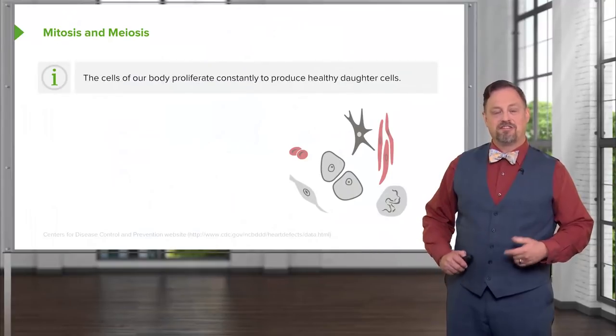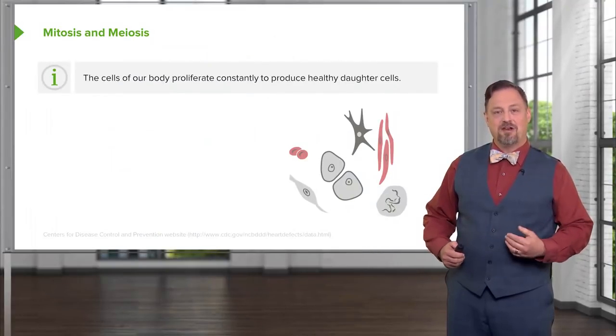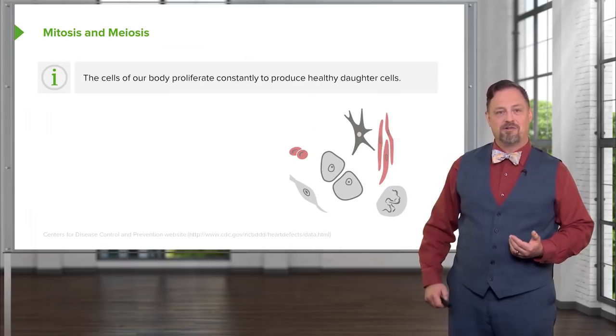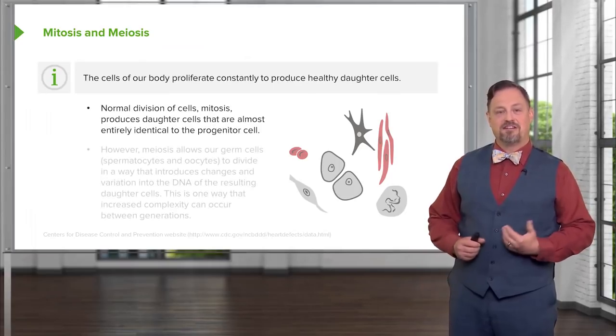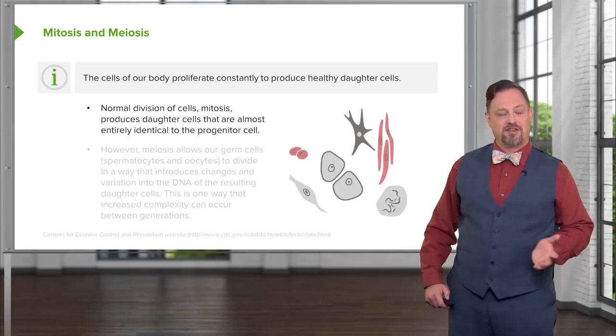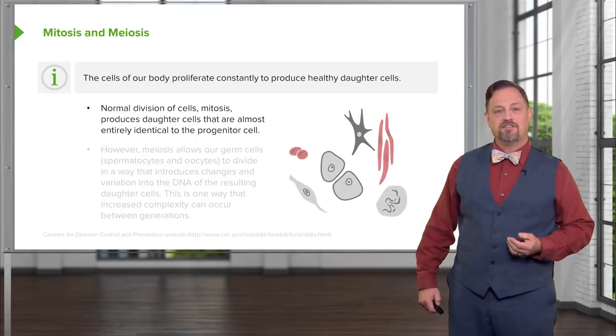The cells of our body proliferate constantly to replace dead cells and to keep us healthy and constantly able to adapt to our environment. The normal sort of division produces exact genetic copies of the cells that the daughter cells come from. This is mitosis.